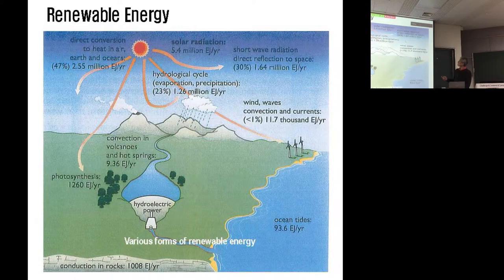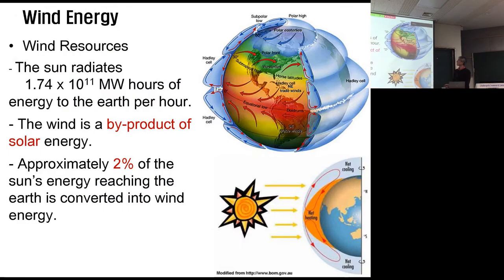Radiation solar radiation. Wind energy, wind resources. The sun gives all the powers, all the energies, big numbers of power to the earth per hour. Wind is a byproduct of solar energy. Approximately two percent, only two percent of this number reaching the earth is converted into wind energy. Still wind energy is only two percent but still big enough.